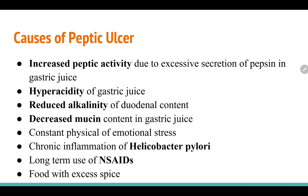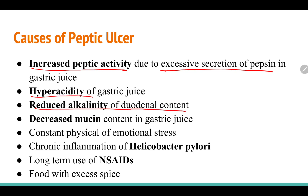The causes of peptic ulcer include: increased peptic activity due to excessive secretion of pepsin, hyperacidity of gastric juice, reduced alkalinity of duodenal content, decreased mucin content, constant physical or emotional stress, chronic infection with Helicobacter pylori, long-term use of NSAIDs, and food with excessive spice.